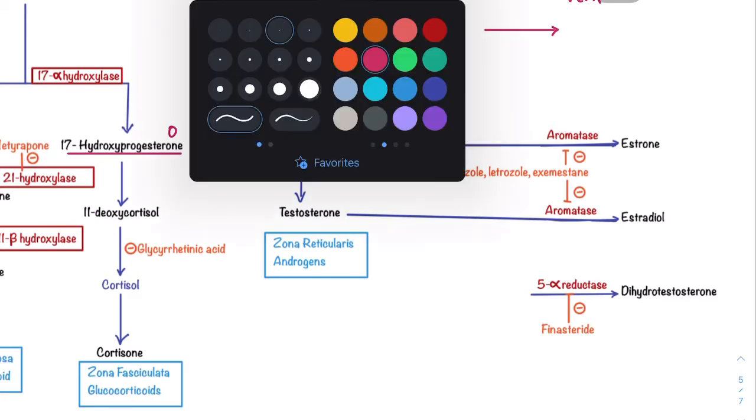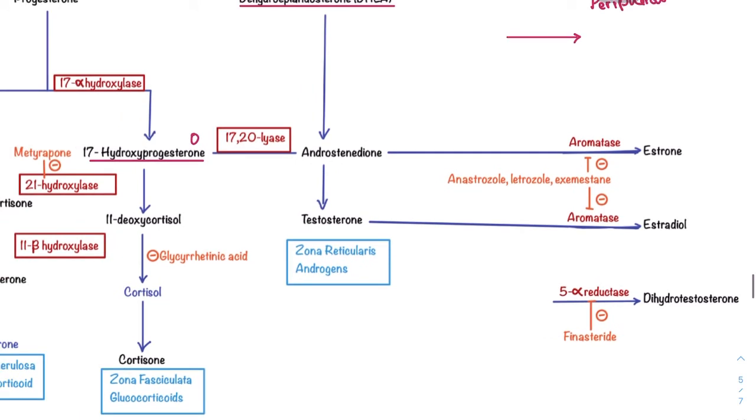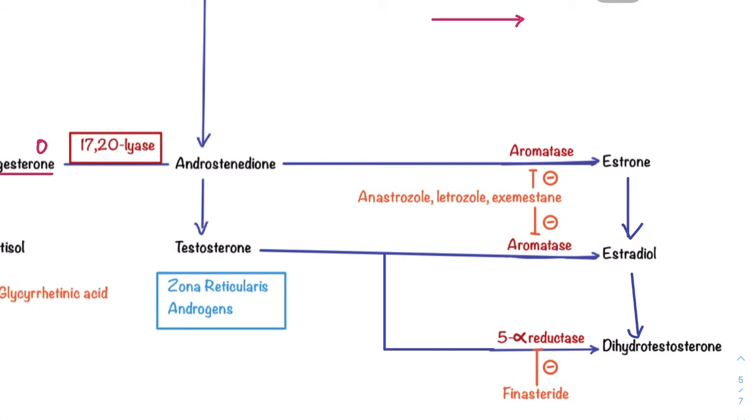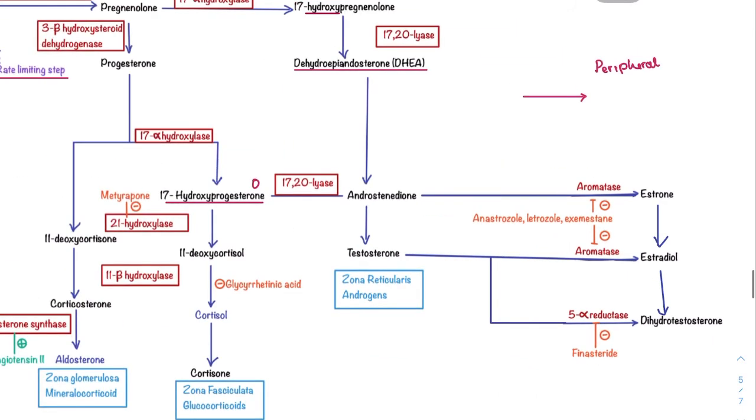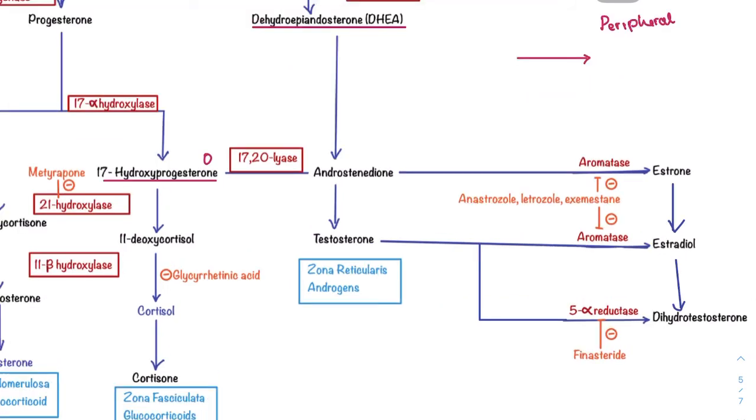It can be acted on either by aromatase to form estradiol, or by 5-alpha reductase to form DHT (dihydrotestosterone) directly. Aromatase will convert androstenedione or testosterone to either estrone or estradiol respectively. These drugs - anastrozole, letrozole, and exemestane - can inhibit aromatase enzyme. The 5-alpha reductase can be inhibited by finasteride.